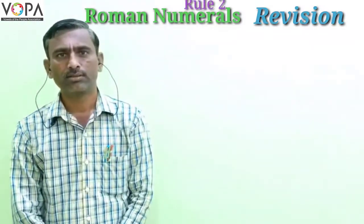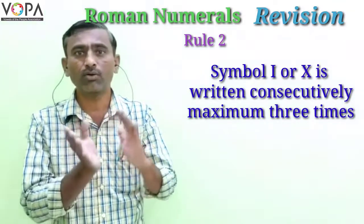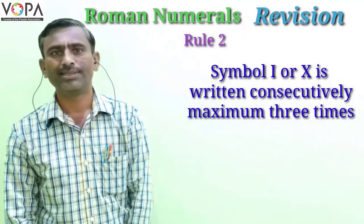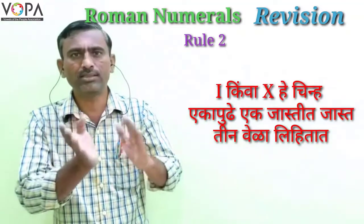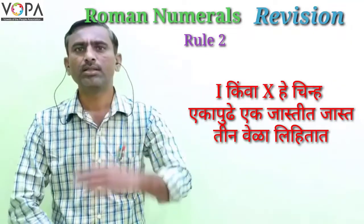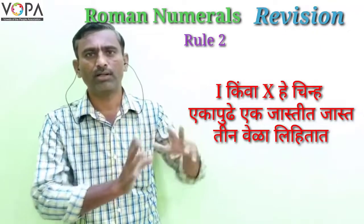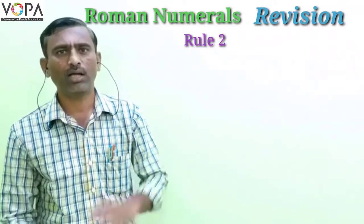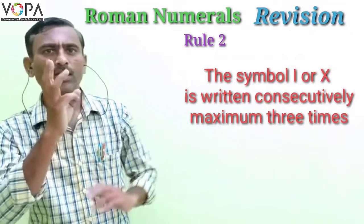The next rule is: the symbol I or X is written consecutively a maximum of three times only.